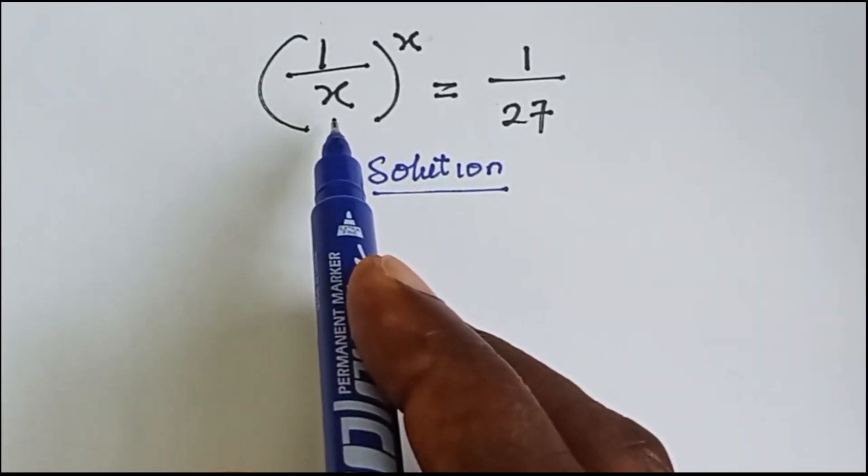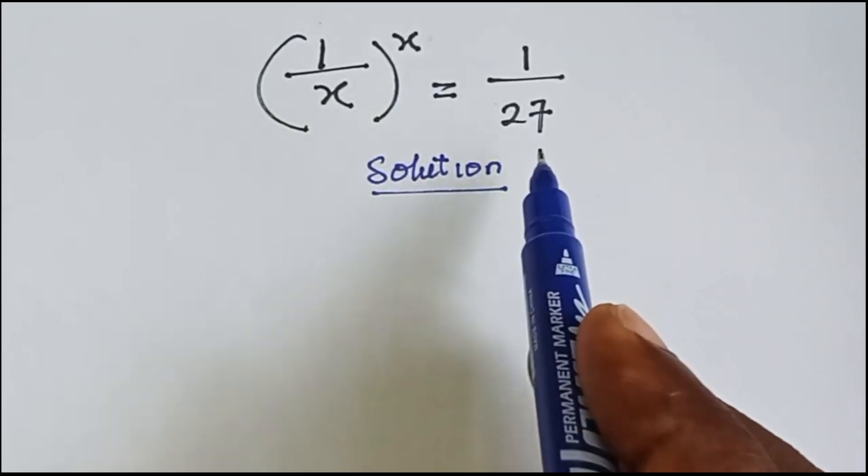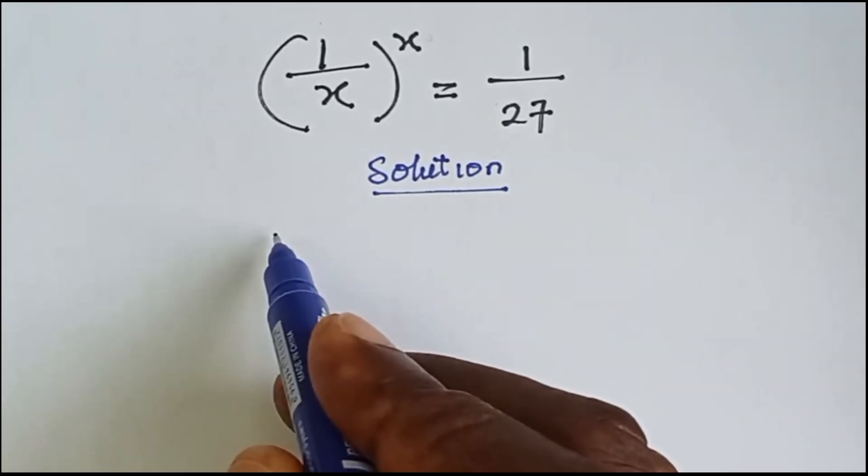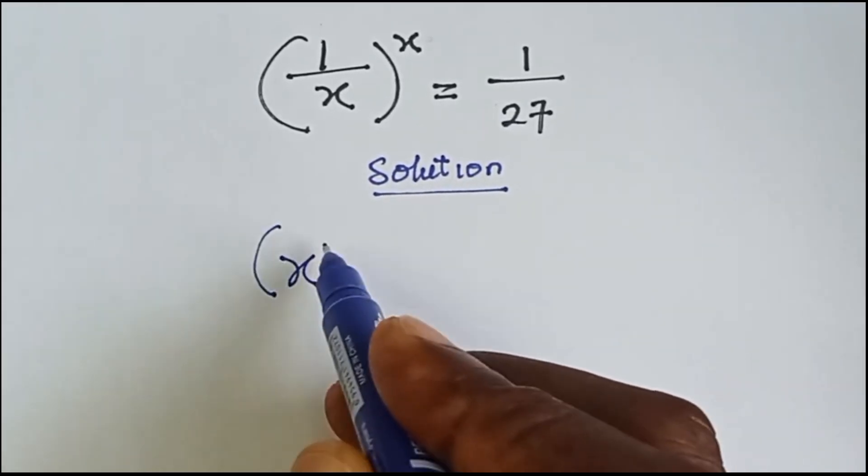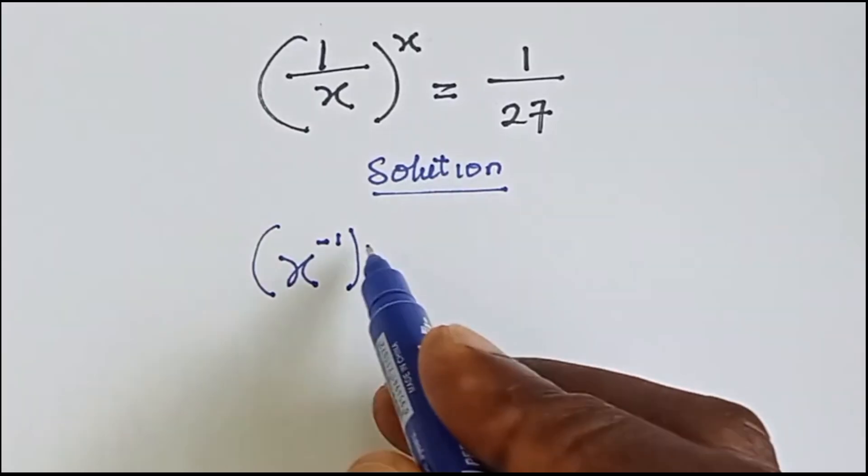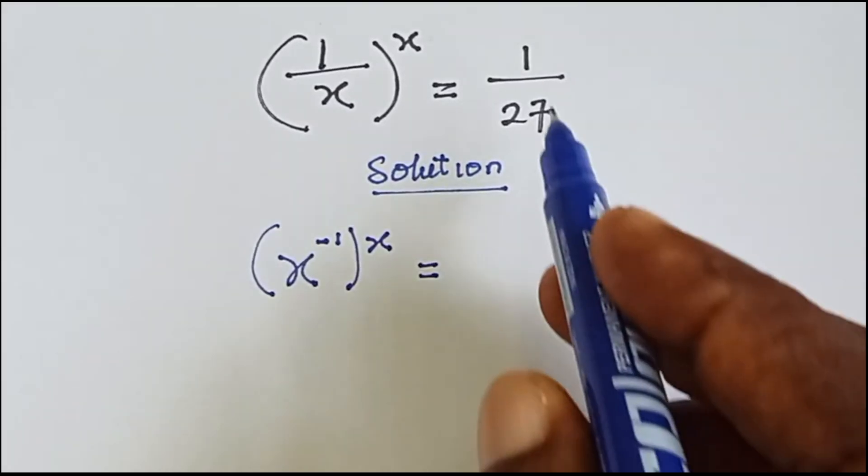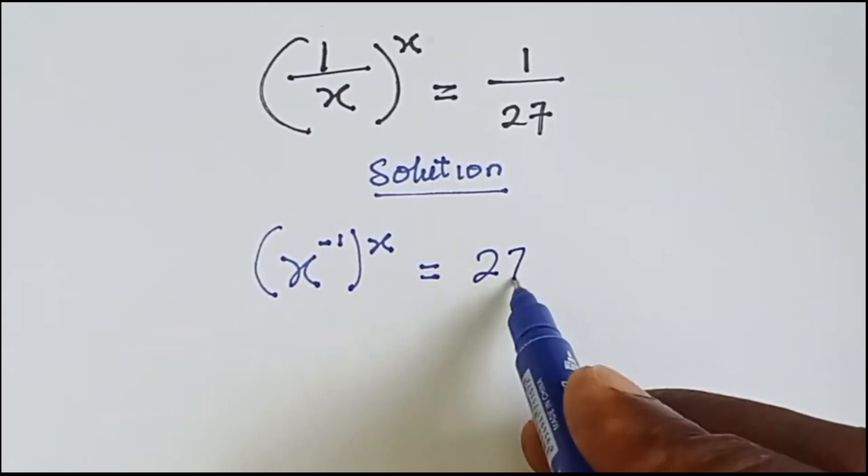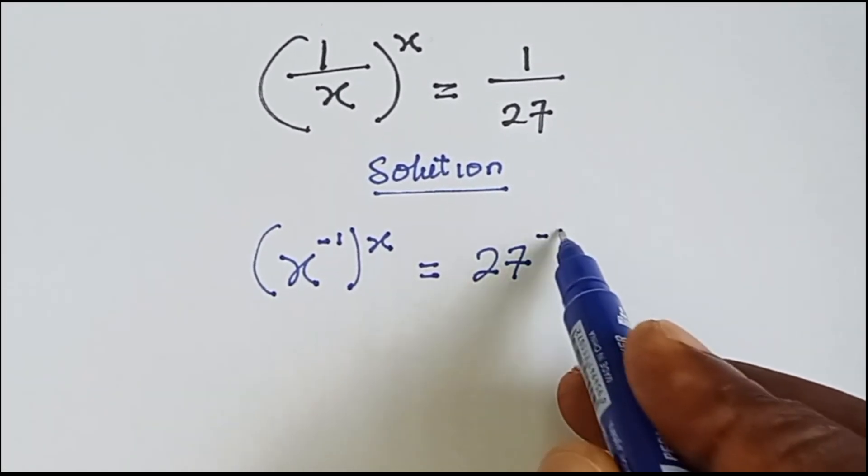We have 1 over x raised to the power x equals to 1 over 27. This 1 over x can also be written as x raised to the power minus 1. Then you write this x here equals to 1 over 27 can be written as 27 raised to the power minus 1.